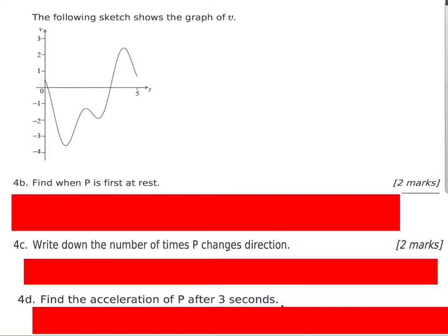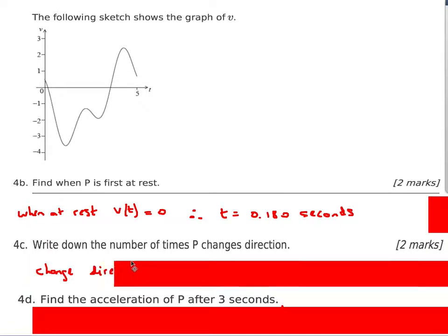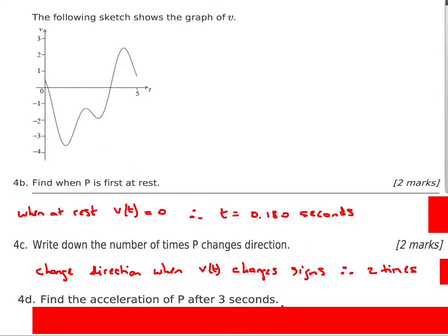Find when p is first at rest: the velocity is zero when t = 0.180 seconds. For the number of times p changes direction: it changes direction when the velocity graph crosses the x-axis. It crosses once and then again, so it changes direction two times.